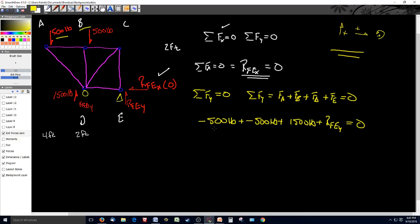Now I can do some pretty quick math here. I can look at this and say hey, this right here is minus 1000 pounds, and this is 1500 pounds. So minus 1000 plus 1500, this whole thing is going to result in 500 pounds plus the reactionary force at E y has to equal zero.